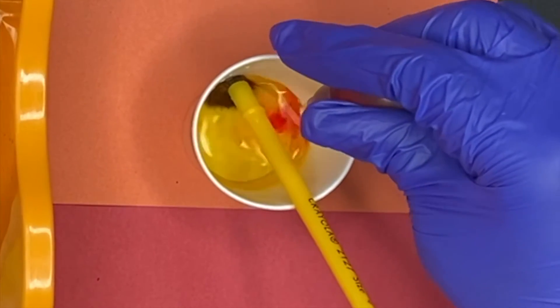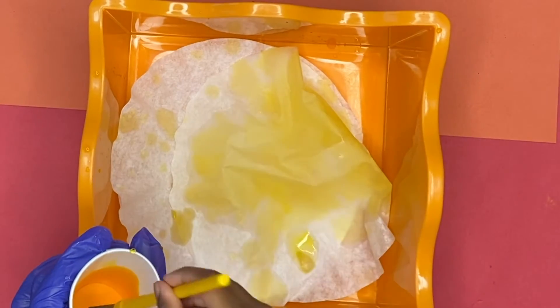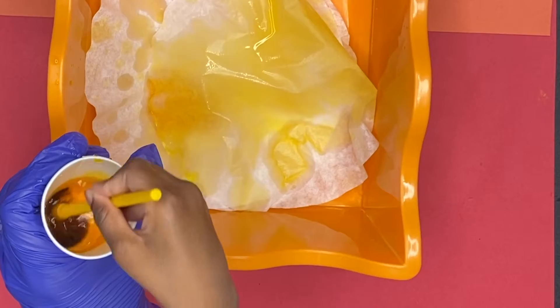And I didn't really like the way the yellow turned out, so I added some red to make it an orange and now I'm going to use that to saturate my filters.